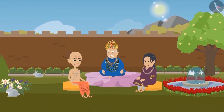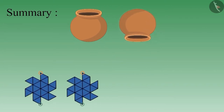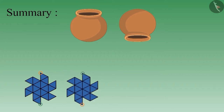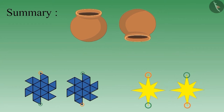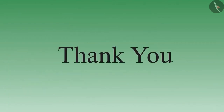We will share the answer to this question in the next video. In this video, we learned about objects and images which change when rotated by half, and also saw examples of objects which do not change when rotated by half. Images that look the same as before when rotated by half have half-rotational symmetry — that is, one-half rotational symmetry. Try to rotate such objects around you and observe. Thank you.